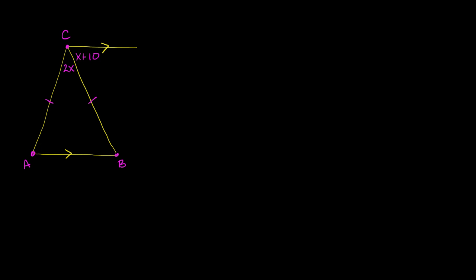So what do we have here? We have a triangle, and we know that the length of AC is equal to the length of CB. So this is an isosceles triangle — we have two of its legs are equal to each other.